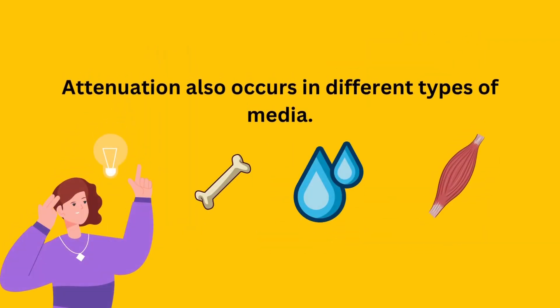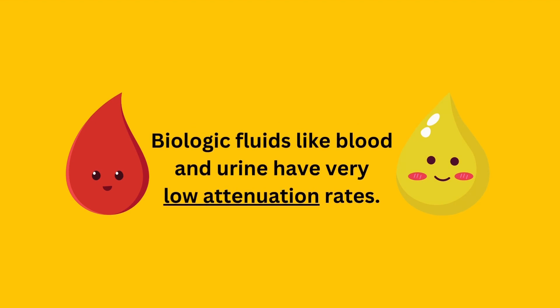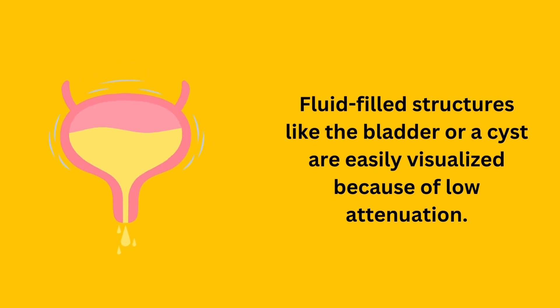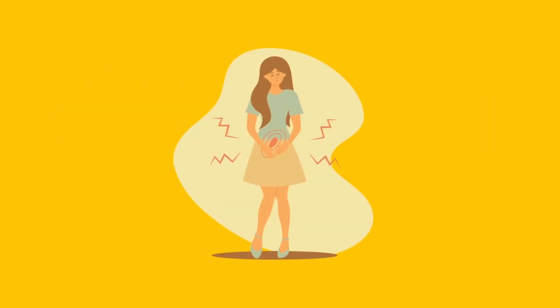While we've focused on attenuation in soft tissue so far, it's important to understand that attenuation also occurs in other types of media encountered in ultrasound imaging. Let's explore how attenuation varies in different media. Biologic fluids such as blood or urine are known to have low attenuation rates when compared to soft tissue. This is because fluids contain fewer obstacles or structures for sound waves to interact with. Because fluids have very low attenuation rates, they act as excellent acoustic windows in ultrasound imaging. When we image a fluid-filled structure, such as the urinary bladder or a cyst, the sound waves encounter minimal scattering and absorption as they pass through the fluid. This allows the sound waves to penetrate deeply into the structure and return clear, well-defined echoes to the ultrasound transducer. As a result, fluid-filled structures are easily visualized in ultrasound imaging.